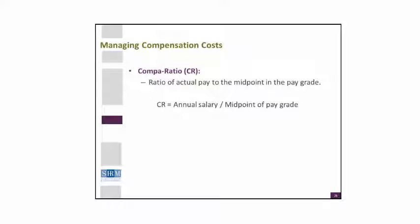They talk about managing compensation costs, and we look at something called a COMPA ratio. When I first saw the nomenclature of compensation costs, this is actually really one of pay administration — salary administration — how do you properly pay people and what are some of your ways of doing so.